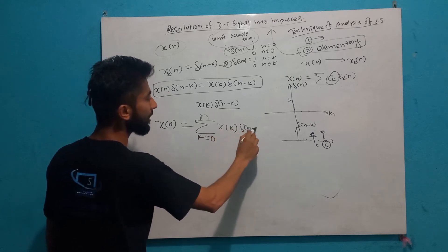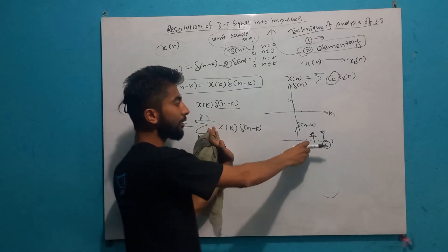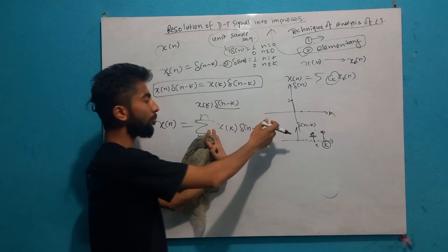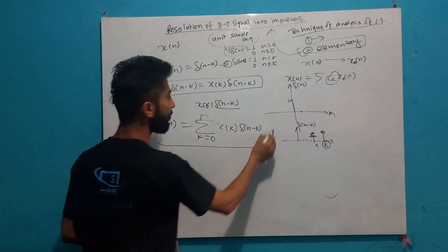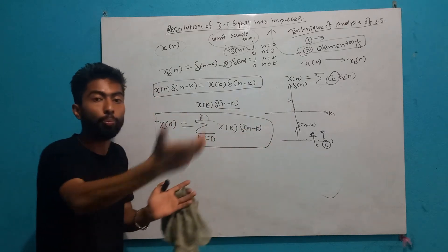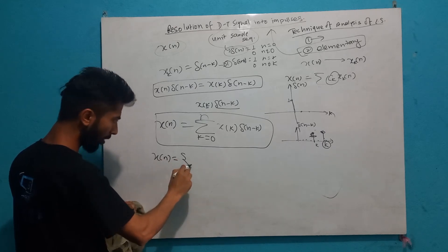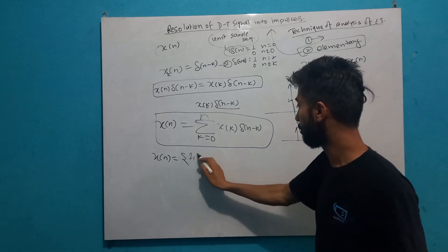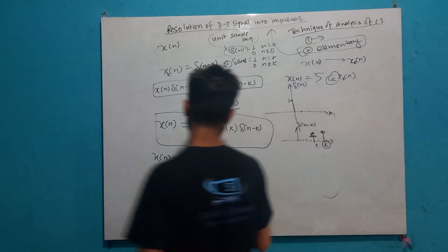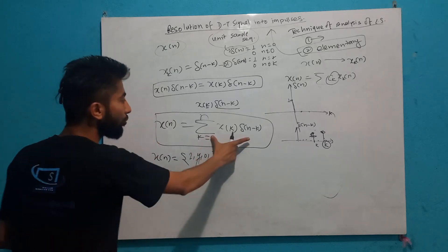The overall summation over k of x[k]·del[n-k] — what do you have to do? Overall summation. The value of each term: if you have to express x[n], you have to decompose it. We can see that the unit impulse sequence and unit sample sequence allow us to decompose x[n] and the formula will decompose accordingly.